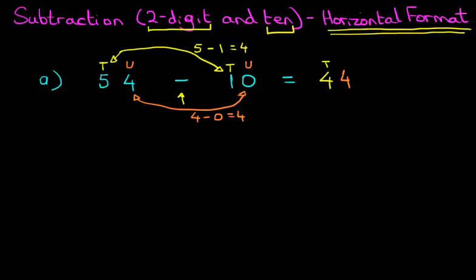In fact, I'll label the answers as well. We've got tens and units. So 54 minus 10 is 44. The units have not changed, but the tens have. The tens have gone down by 1, from 5 to 4.